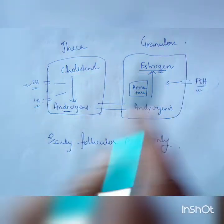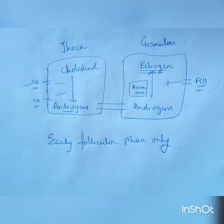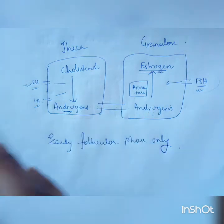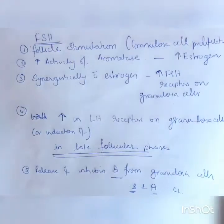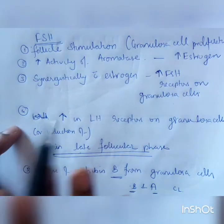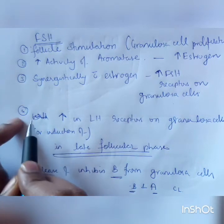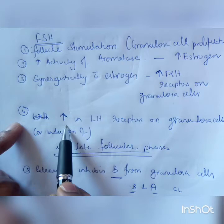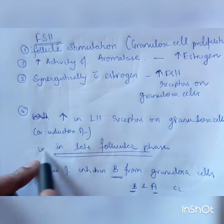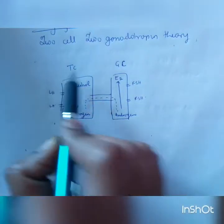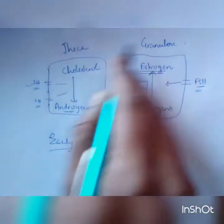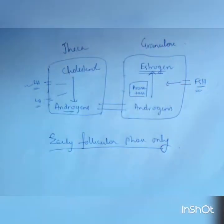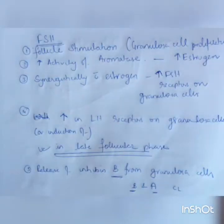In a cycle, if FSH is not there, LH will help only in production of androgens and a little progesterone if luteinization has taken place — and that too will not happen if ovulation doesn't take place. This 2-cell 2-gonadotropin theory, active in early follicular phase, changes in the late follicular phase because now the granulosa cells also have LH receptors. This granulosa cell is then called a luteinized follicle where all theca and granulosa cells will produce everything.